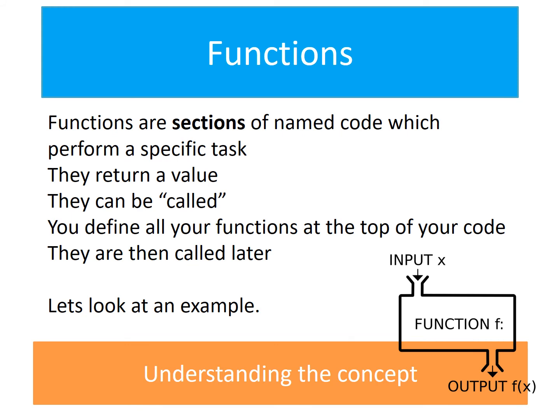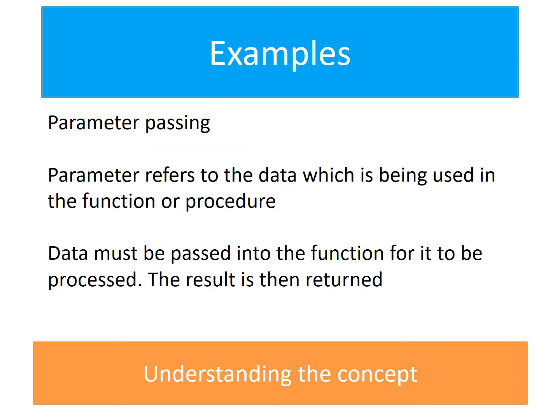A function is very similar to a procedure — they can also be called. However, the difference with a function is that it actually returns a value. Let's have a look at an example of parameter passing in code — this will be shown in class. Parameter passing refers to any data that is passed to a function or a procedure. This data can then be used by the procedure. Data that is being passed should have a different name, and any data can only be used inside that routine. This could then cause something to be returned to the main code.